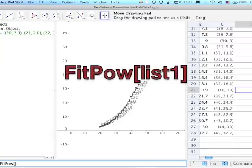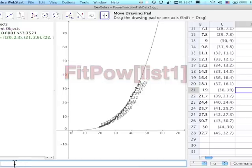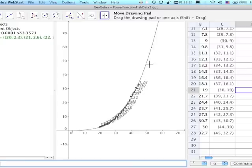My list of points is called list1, so I'm going to type that in. And the first thing you notice is that it plots the function and it also places the function up top.